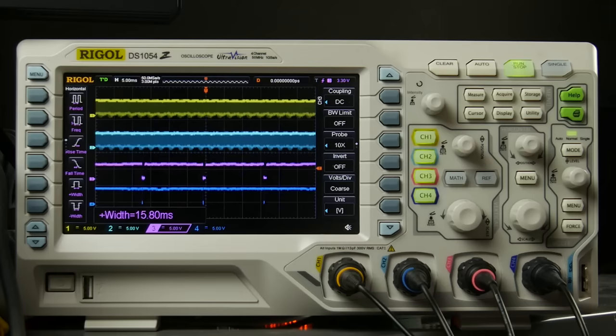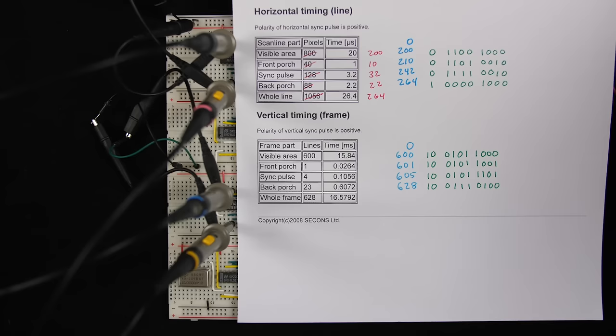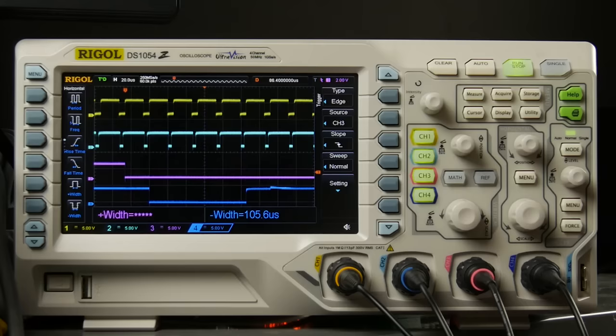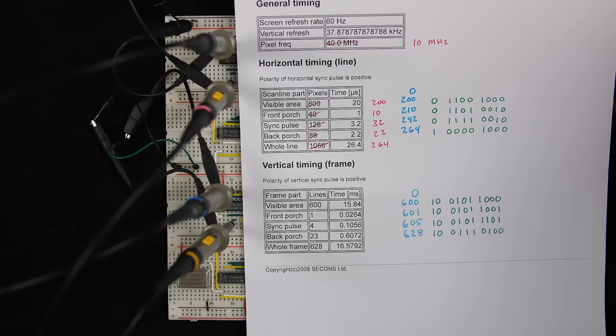Zooming in even more, the measurement gets closer to 0.1056. You can also see that when the visible area ends, there's one horizontal sync pulse before the vertical sync pulse begins, and then the vertical sync pulse spans four horizontal sync pulses. So after the visible area we get one line, followed by the sync pulse which is four lines long — all matching the expected timing perfectly.